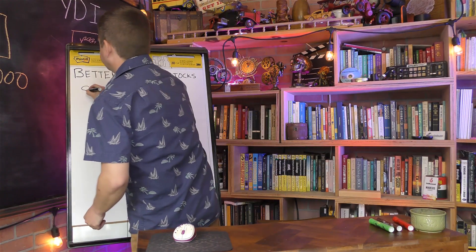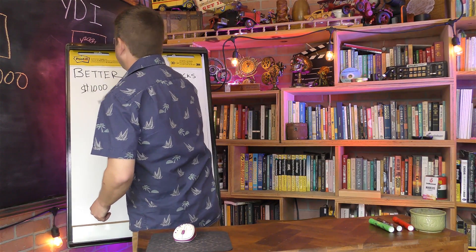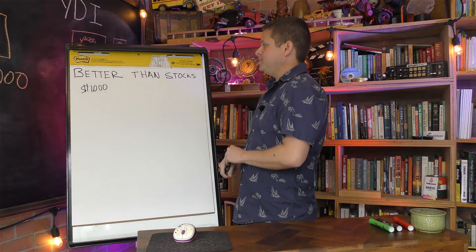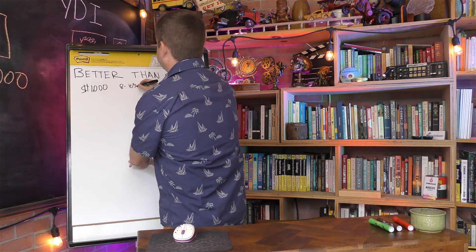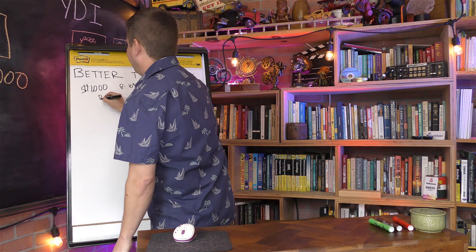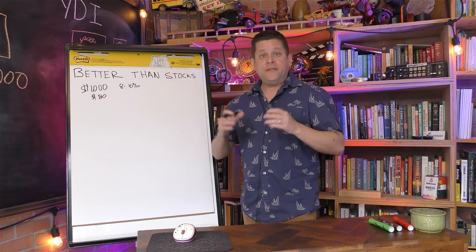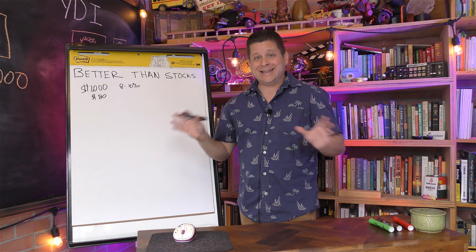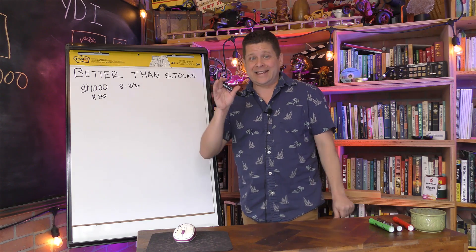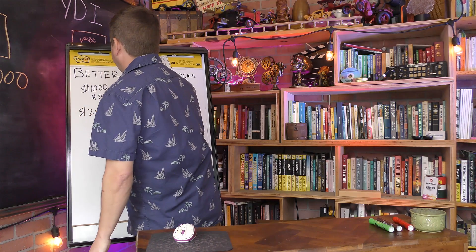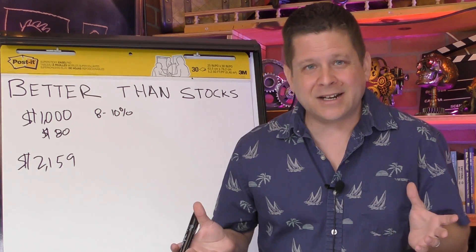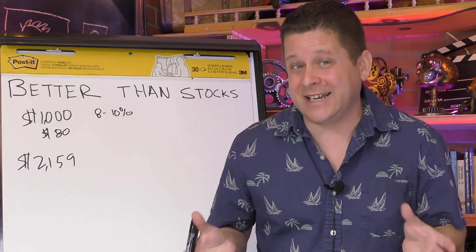Now, if I was to take $1,000 and invest it in the stock market, assuming an average rate of return of 8 to 10%, I'm going to average myself about $80 per year. That means if I took that $1,000 and left it alone for 10 years, at the end of 10 years, I would have a whopping $2,159. That's not a big payoff for tying up my money 10 years.